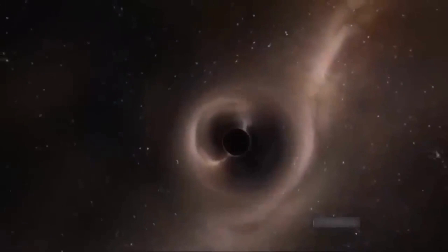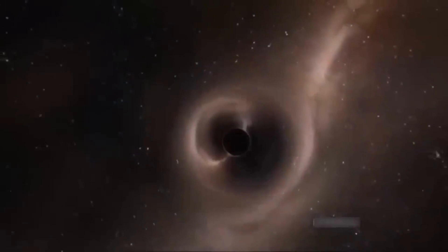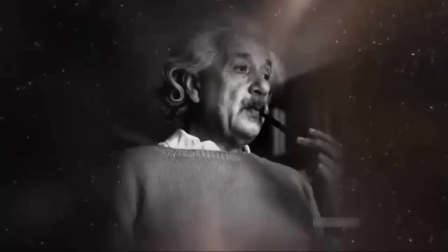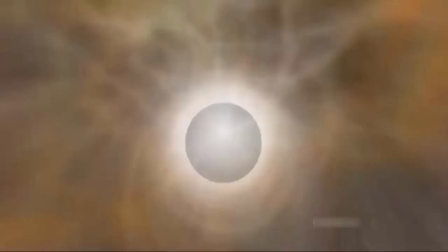Einstein himself concluded black holes were too strange to be real. Albert never really liked the idea of black holes. He thought they were anathema. This was something that nature should avoid. The places where space and time became infinitely twisted up. He thought, no, nature shouldn't allow that.